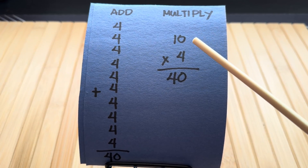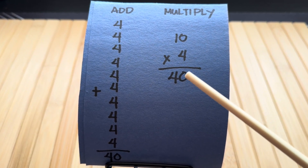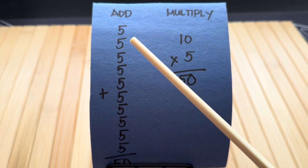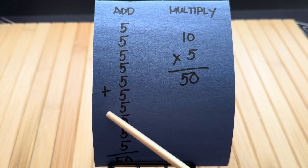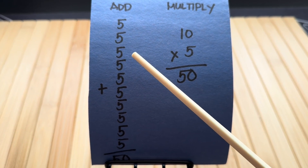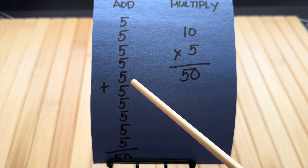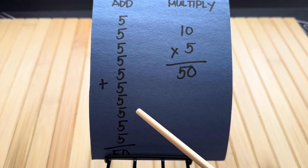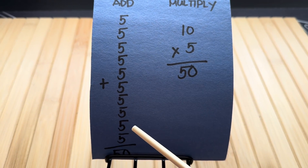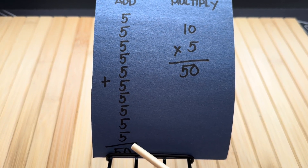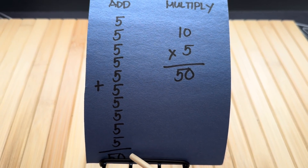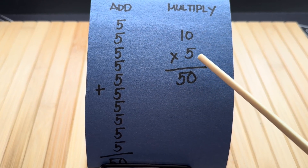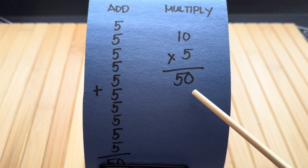Or in multiplication, 10 times 4 is equals to 40. And last but not the least, 5 plus 5 plus 5 plus 5 plus 5 plus 5 plus 5 plus 5 plus 5 plus 5 is equals to 50. Or in multiplication, 10 times 5 is equals to 50.